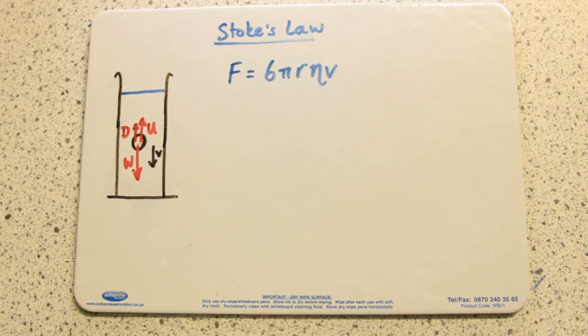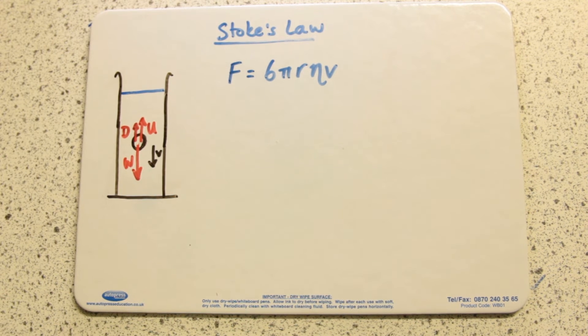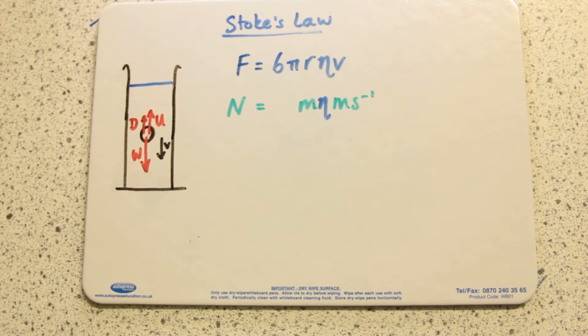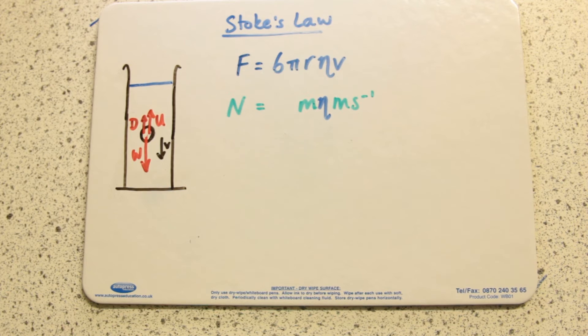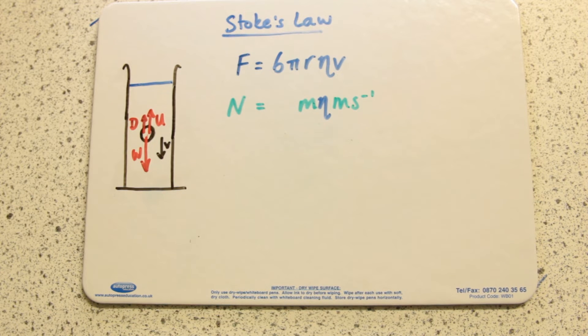Where r is the radius of the sphere, η is the coefficient of viscosity, and V is the velocity of the sphere. Simply put, the higher η is, the higher the coefficient of viscosity, the thicker it is, the more drag force you're going to get.